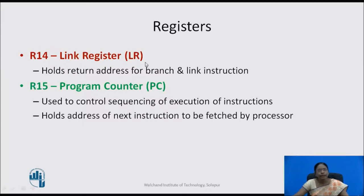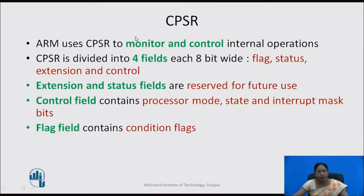R14 is the link register. It holds the return address for branch and link instructions. R15 is the program counter, used to control the sequencing and execution of instructions. It is called the program counter because it holds the address of the next instruction to be fetched by the processor. ARM core uses CPSR for monitoring and control of internal operations.